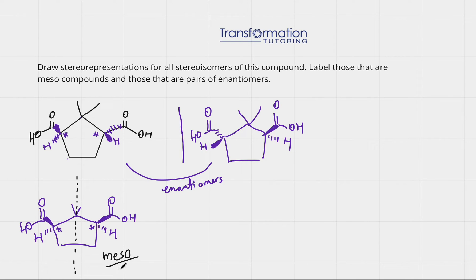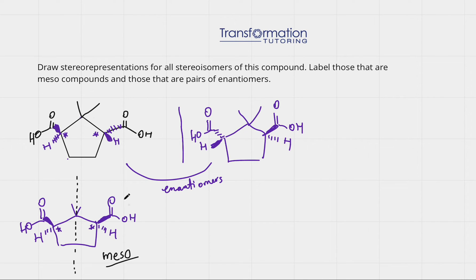A meso molecule is achiral, which means it does not have an enantiomer — it does not have a mirror image. If we draw its mirror image, it will not be a different molecule; the molecule will be able to superimpose on itself. So the mirror image of a meso molecule is itself — it's not a different molecule, and therefore we are not going to draw its mirror image.